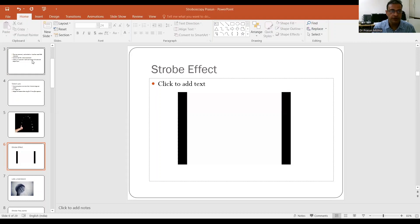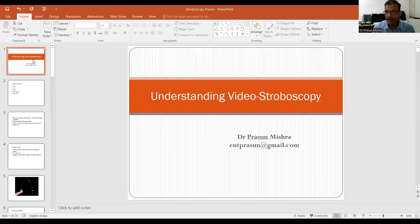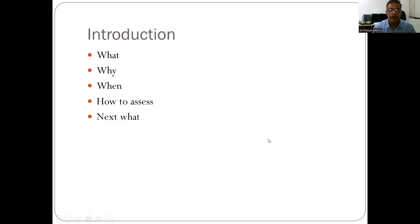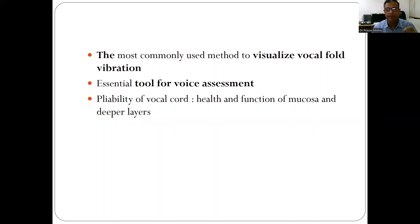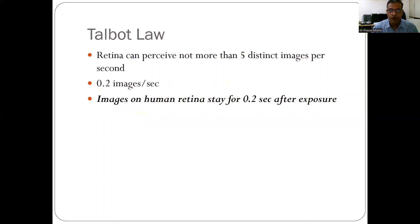In video stroboscopy, we will be understanding what it is, why it is done, when to do it, how to assess it, and what its future is. This is the most commonly used method to visualize vocal fold vibration at present. If stroboscopy is not done in voice assessments, the assessment is not complete. It detects vocal cord pliability — mainly the functioning of the mucosa and deeper layers of the vocal cord.